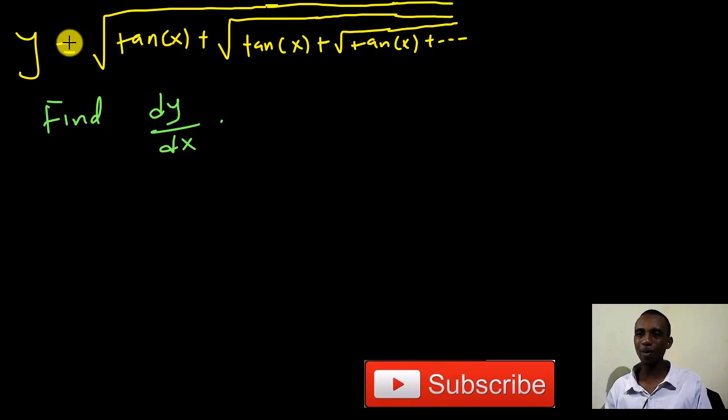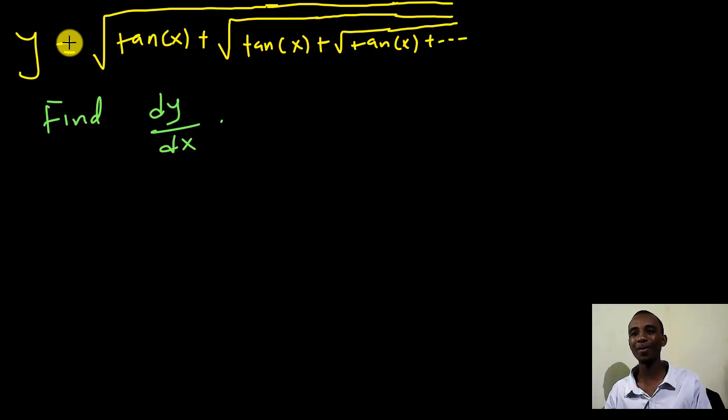So today's problem is a little bit even more interesting. Y equals the square root of tan of x plus the square root of tan of x plus the square root of tan of x and so on. We don't know how many tan x's there are, and we want to find the derivative of this function.